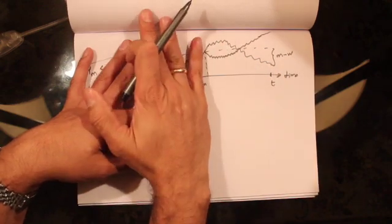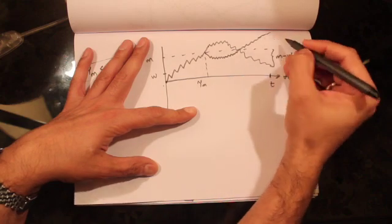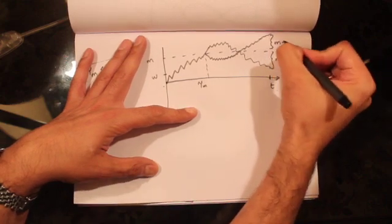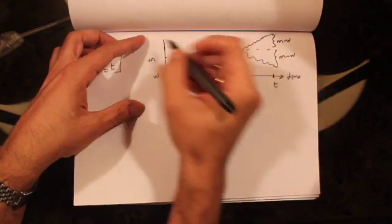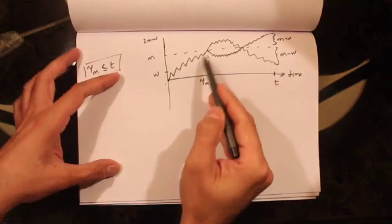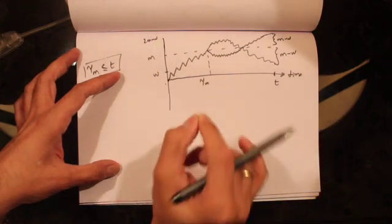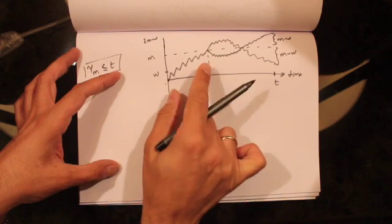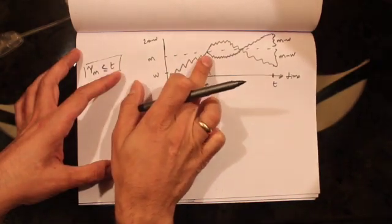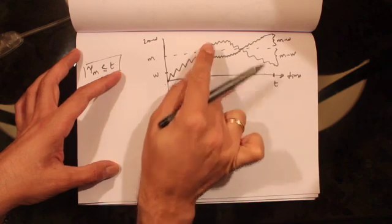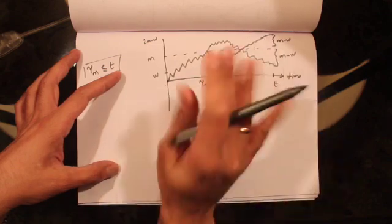If the original path ended at W, the reflected path ends at 2M minus W — since the distance from M is still M minus W, giving a total level of M plus (M minus W) equals 2M minus W. The most important thing to notice is that these two paths result from the same up and down movements; after tau M we simply interchange up and down. Therefore, the probability of these two paths is exactly the same.